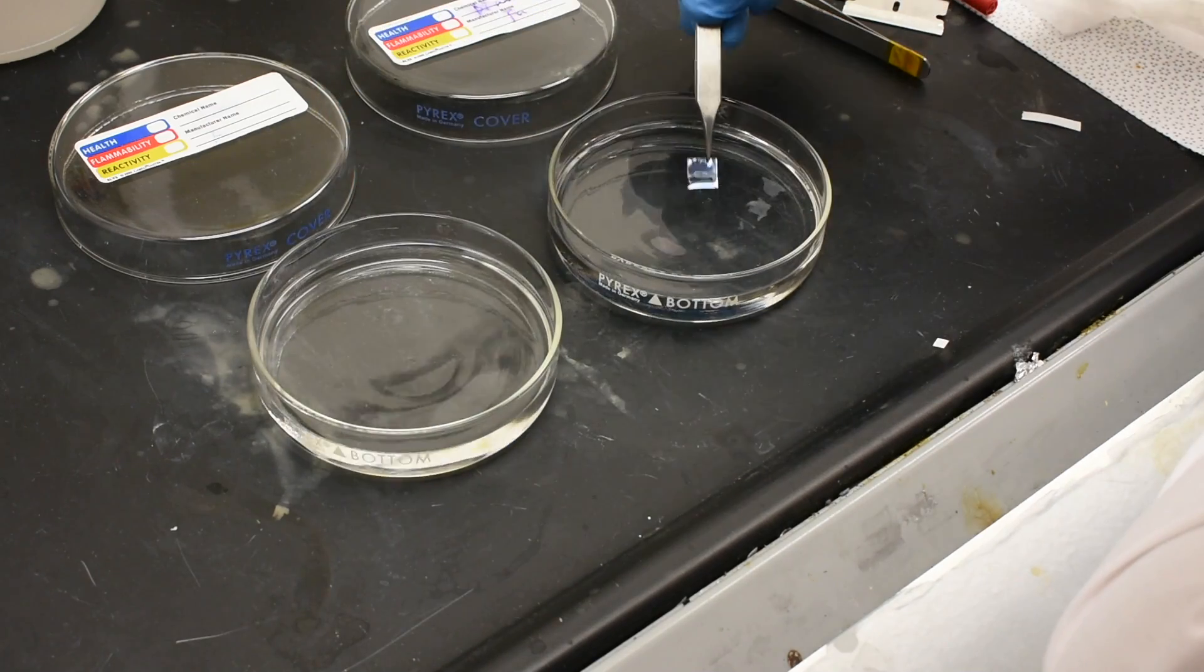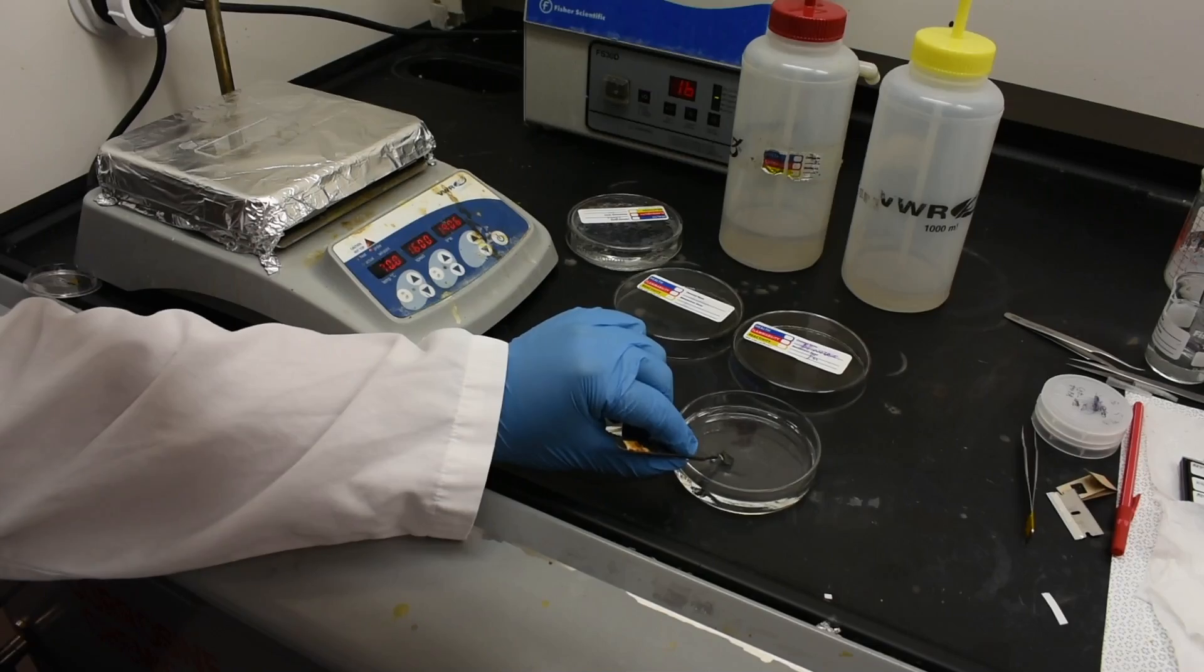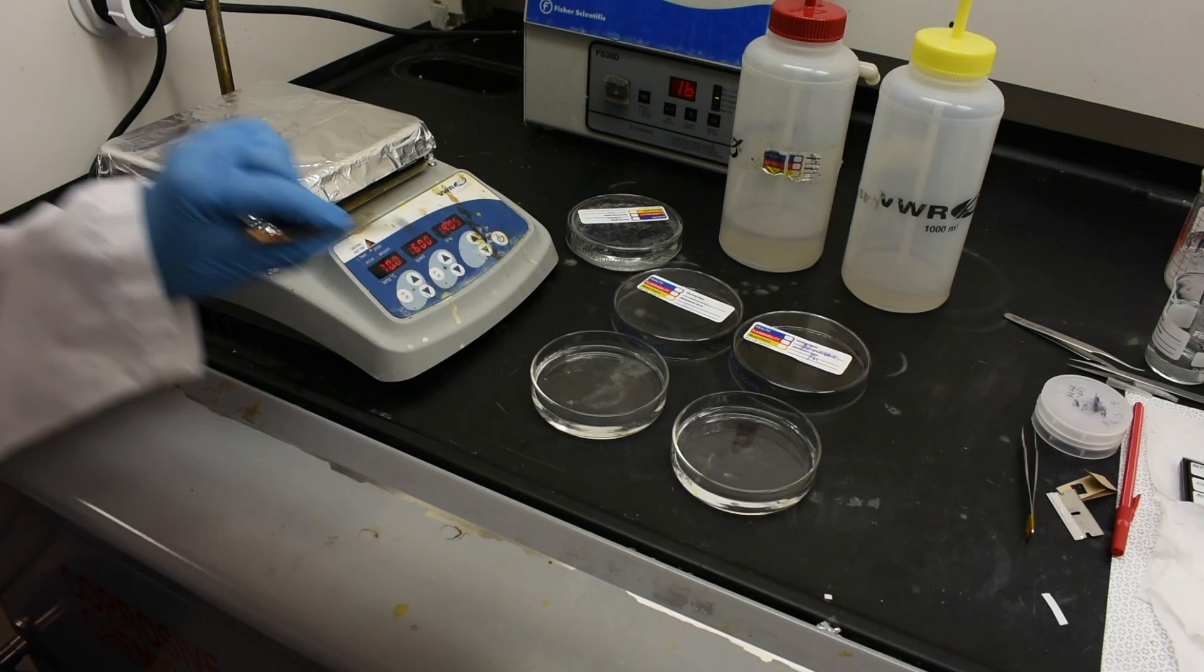After the acetone soak, the samples are rinsed in isopropyl alcohol for 10 minutes, and then dried on a hot plate at 70 degrees C for 5 minutes.